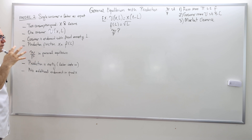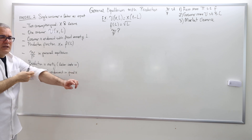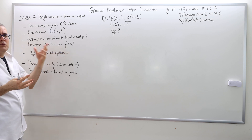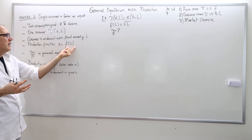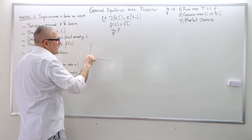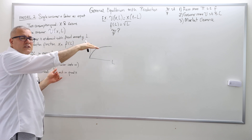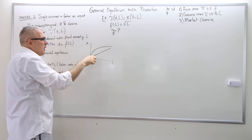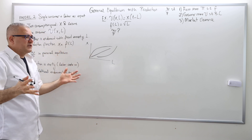The production function: the firm is going to produce consumption good X by using only one input. Let's stick to the one-input case in this model. The X amount of production depends on labor — this is the production function. Usually the production function is a concave function: if this is labor and this is X, it has to be some concave function, meaning decreasing returns to scale technology. It could be linear, meaning constant returns to scale, but it can't be convex because that would mean increasing returns to scale.